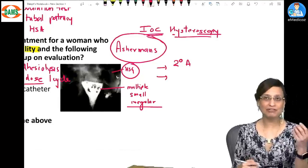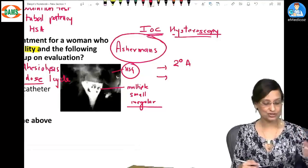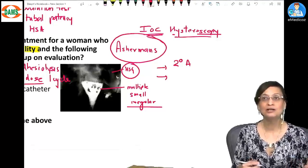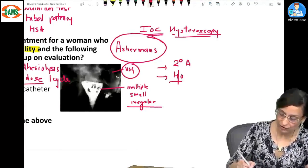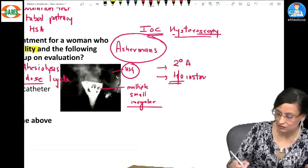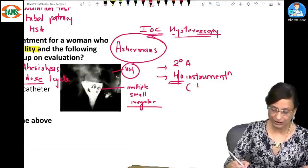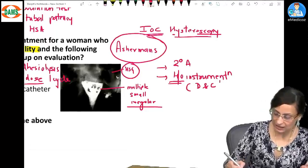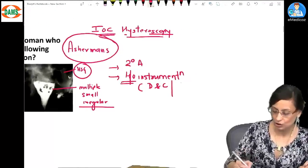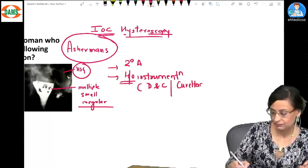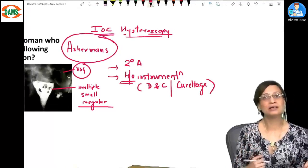Second thing that AIMS keeps asking is what would be the relevant history? If I have to give this question with a clinical history, then what would be the relevant history? History of instrumentation, and most importantly it will be like a D&C or a curettage like MTP.